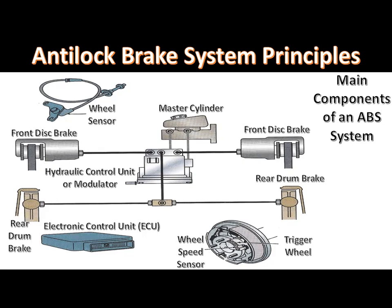ABS systems are usually one of three types: a one-channel system in which both rear wheels are controlled together; a three-channel system in which each front wheel is controlled individually and the rear wheels are controlled together; and a four-channel system. The ABS system should operate only when wheel lock-up is imminent — it can be thought of as electronic hydraulic pumping of the brakes under panic or adverse road conditions. It is a myth that ABS will prevent the wheel from skidding entirely; although it does prevent complete wheel lock-up, it allows some wheel slip in order to achieve the best braking.